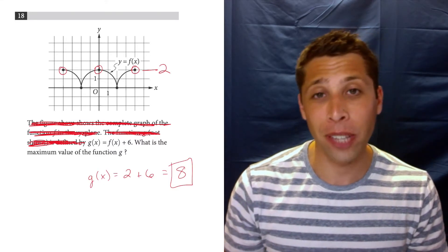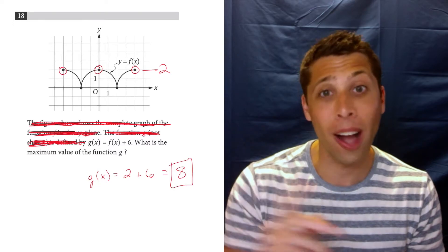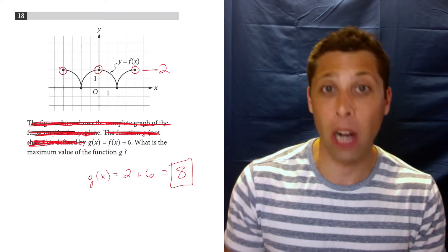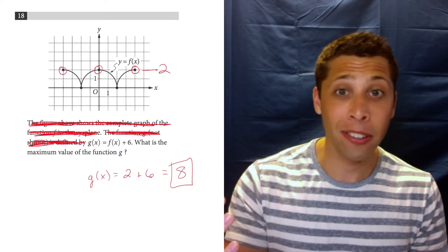Basically what happens with function notation is we get tired of calling everything y equals. So we come up with names so that we can better describe what we're talking about. And so we have an f and we have a g.